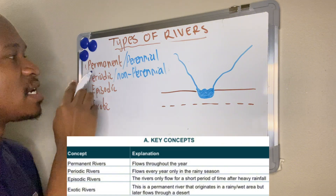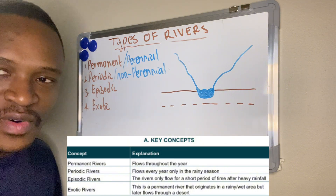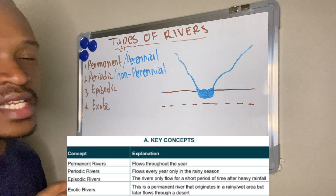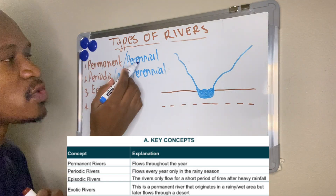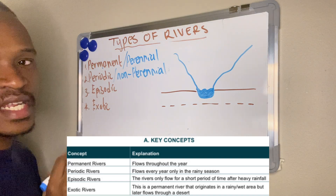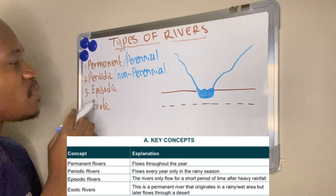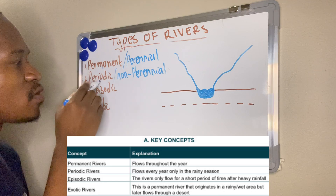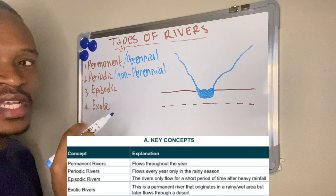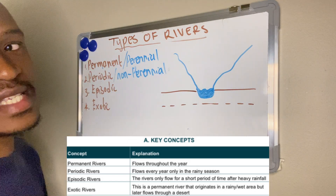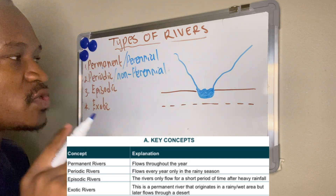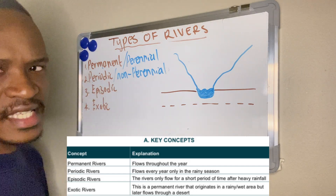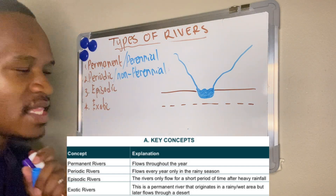So one more time: number one, the permanent river — the word permanent tells you it flows throughout the year, also known as a perennial river. Number two, the periodic river — this one flows every year but only during the rainy seasons. So the periodic river is a seasonal river.